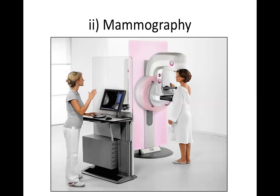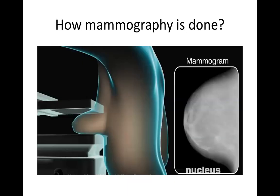Mammography is done for age more than 40 years because at that point ultrasound won't be able to detect lesions in a fatty breast. Mammography is performed in a standing position where the breast is placed within two plates; radiation is given from one side, and the plate on the other side has the film which makes the mammogram.